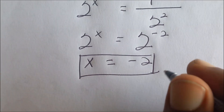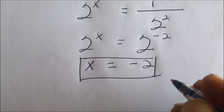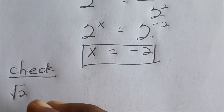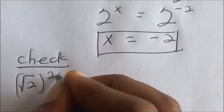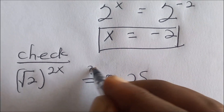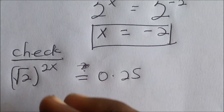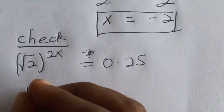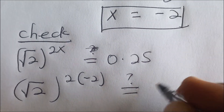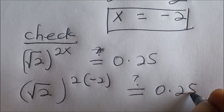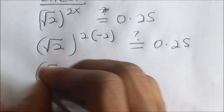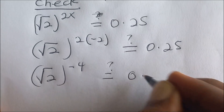Let's check to see if indeed our x is equal to negative two. So we are having root 2 to the bracket 2x is equal to 0.25. We replace x with negative two, so we get root 2 exponent 2 into bracket negative two. This is equal to 0.25. So now we are having root 2 exponent negative four, which is equal to 0.25.